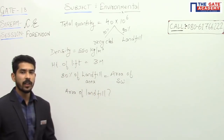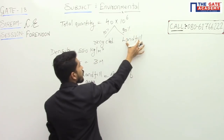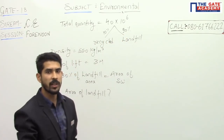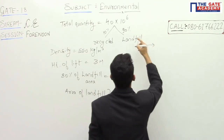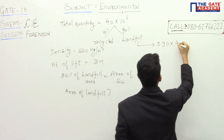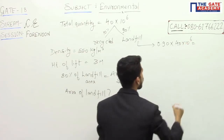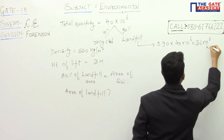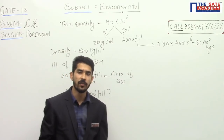From the total waste, 90% comes to landfill, so we are not concerned with the 10% recyclable portion. The amount entering the landfill is 90% of 40×10⁶ kg, which comes out to be 36×10⁶ kg. This is the quantity of waste entering the landfill.